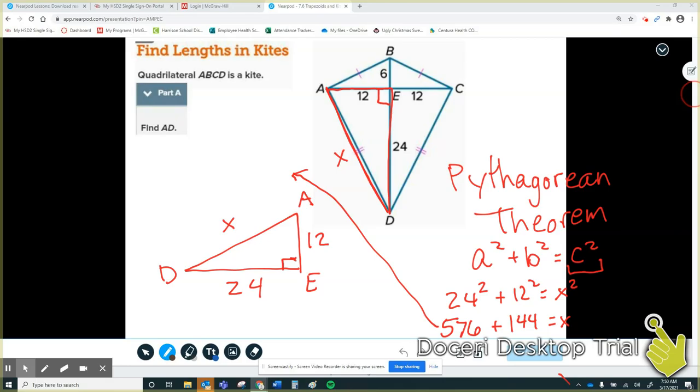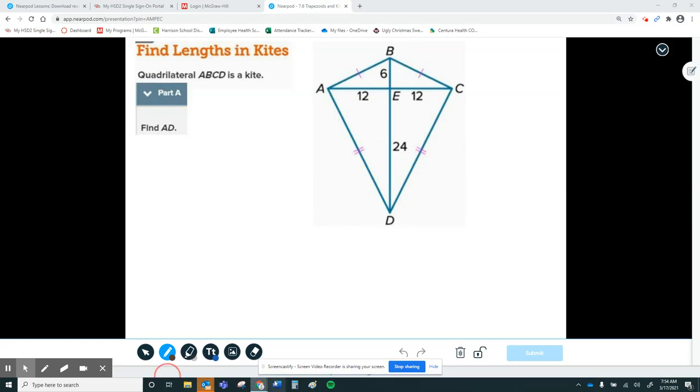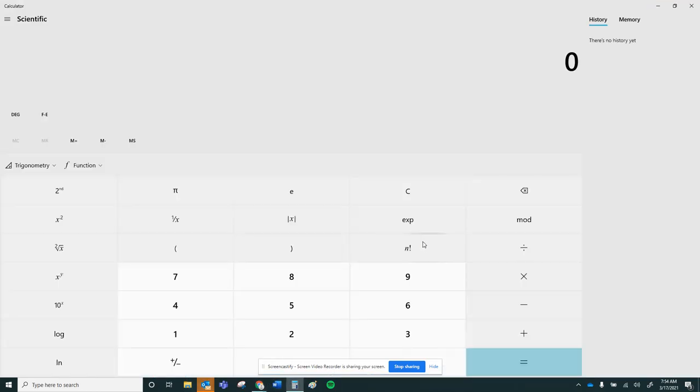Continuing over here, 576 plus 144 is 720. And then finally, to find my answer, I need to take the square root of both sides in order to get rid of the square. The square root and square cancel each other out. And I get that X is equal to, oh hold on real quick, let's find out what the square root of 720 is.